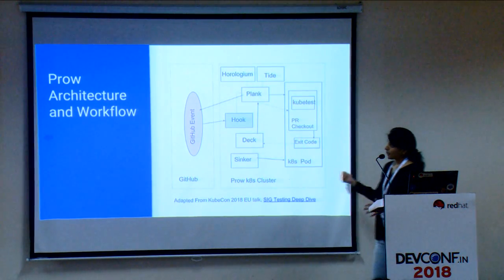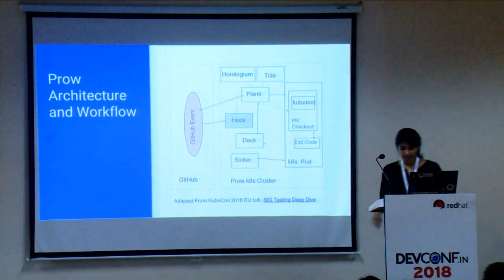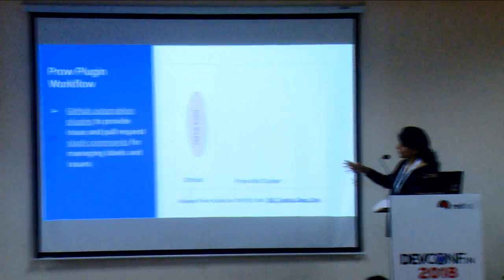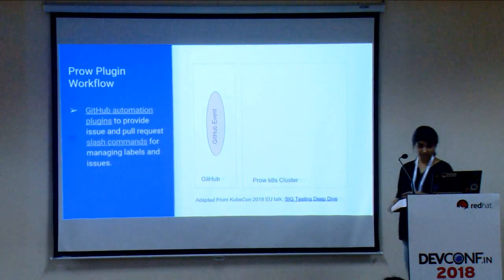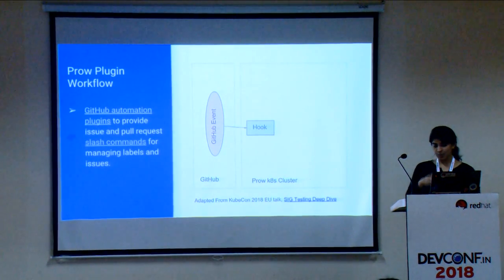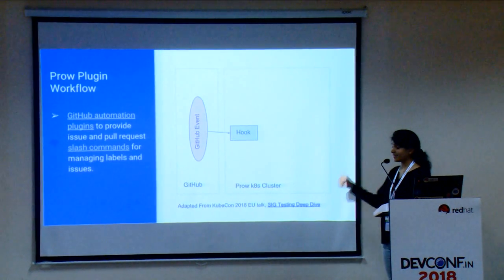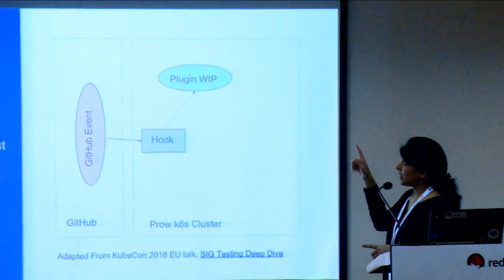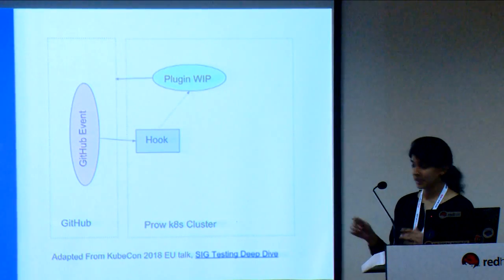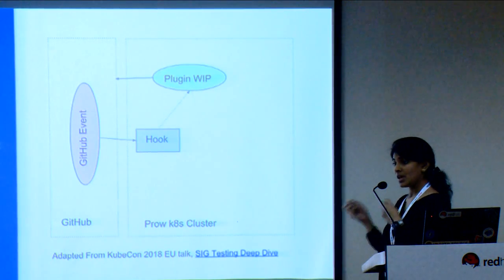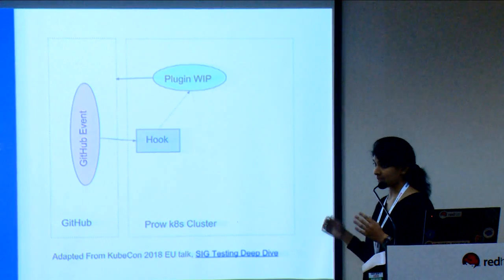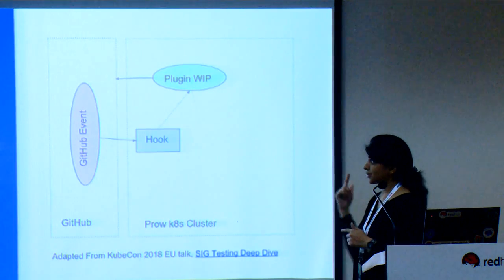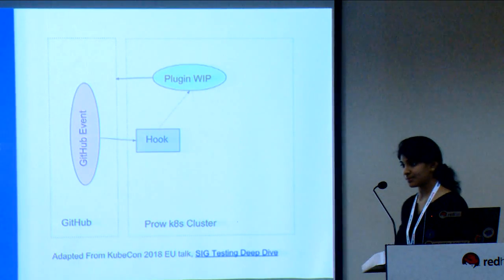That covers job scheduling. The other workflow is GitHub plugins and how they work. GitHub has a lot of automation plugins provided — like the slash command. The same event flow applies: whenever you send a GitHub event it goes to Hook, Hook deserializes the payload and sends it to the relevant plugin. For instance, there is a work-in-progress plugin which attaches work-in-progress labels to PRs so they are not accidentally merged in an automatic merging scenario.